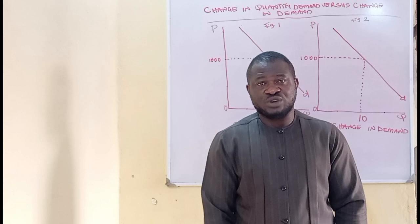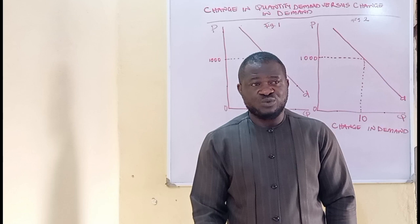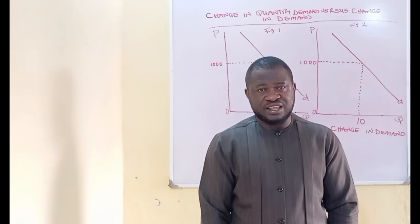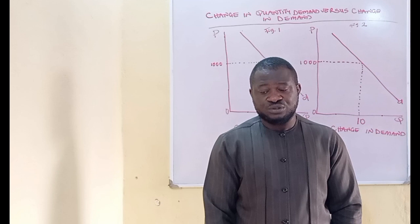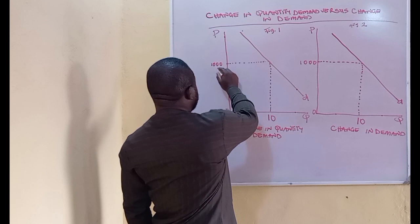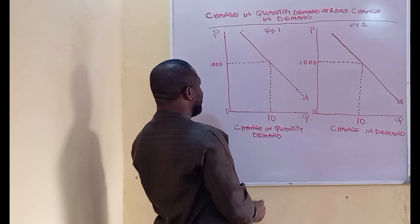I will be assuming further that Mr. John is a salary worker who earns a monthly salary of 100,000 Naira. An extract from his budget shows that Mr. John normally consumes about 10 cartons of bottled ever water monthly at the cost of 1,000 Naira per carton, which is represented on the graph — at the price of 1,000 Naira, Mr. John consumes 10 cartons of bottled ever water from both graphs.